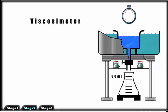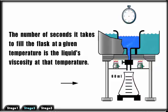A viscosimeter, the device used to measure a liquid's viscosity, consists of a small reservoir surrounded by a water bath used to heat and maintain the liquid at a constant temperature. There is a small orifice below the reservoir through which the liquid can pass once it is heated to a specified temperature. A stopwatch is used to determine how much time it takes to fill a 60 mm flask. The number of seconds that it takes to fill the flask at a given temperature is the liquid's viscosity at that temperature.